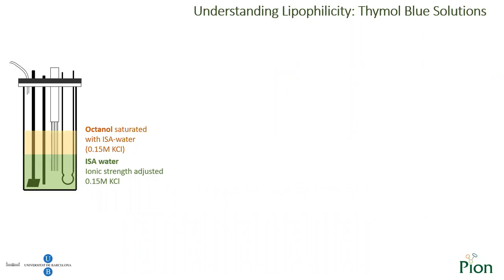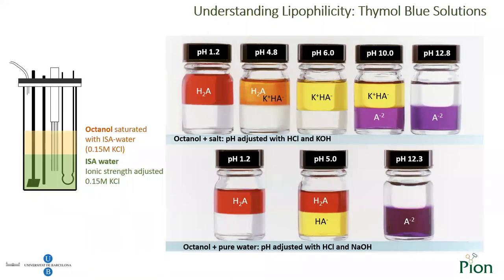Sirius D3 works at physiological ionic strength. Therefore, the ionic strength of the water and solvents used is adjusted to 0.15 molar using potassium chloride. This strong background electrolyte can create ion pairs with the ionized drug. As a consequence, the monoanionic species (yellow) can be extracted to the octanol layer by adding dissolved potassium chloride. The red neutral species is extracted as expected, but the yellow monoanionic species is also extracted in the form of ion pairs, giving an orange color at pH 4.8 — something unexpected when the solution is in pure octanol and water.